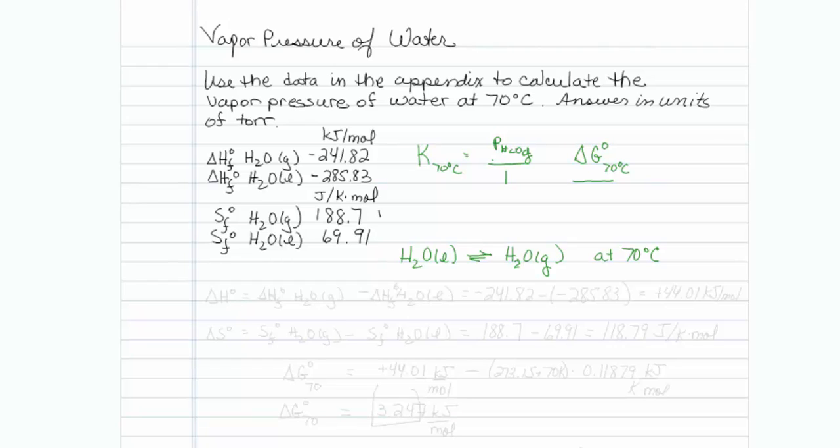So for the delta H for this reaction, I will take the heat of formation of H2O gas minus the heat of formation of H2O liquid. And I will determine the heat of formation for that particular reaction. So that should be minus 241.82 minus a minus 285.83.